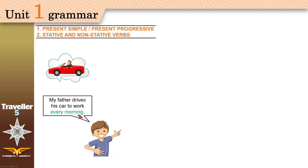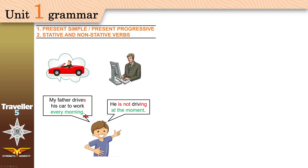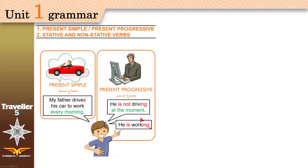As a quick reminder: 'My father drives his car to work every morning. He is not driving at the moment, he is working.' On the left is an example of the present simple tense. On the right is an example of the present progressive tense. For present progressive, we add -ing to the verb and use the verb be: am, is, or are. For present simple, there's no verb be, no am, no is, no are. We don't add -ing; we add -s if the subject is he, she, or it.